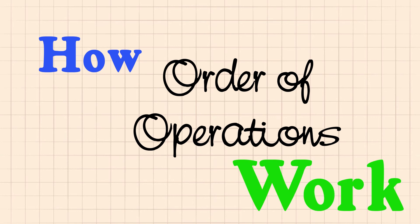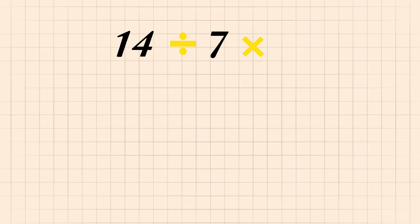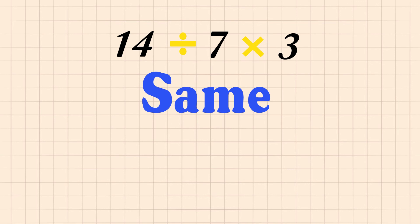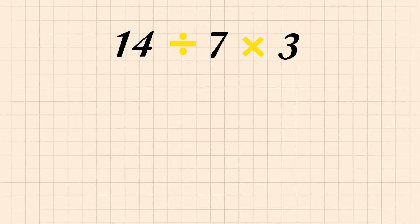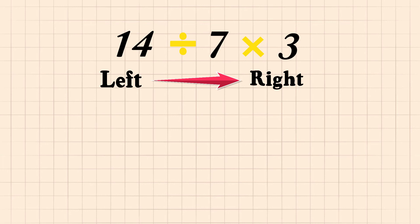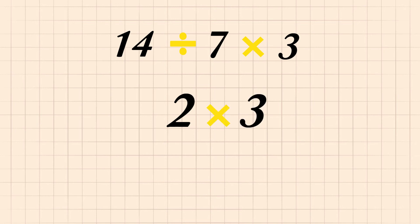Now we have understood how order of operations work. But wait — what about a problem like 14 divided by 7 multiplied by 3? We haven't learnt about questions like this yet. What if we have a problem with operations of the same importance? We solve them from left to right. Which means in this case, first we do division and then multiplication. 14 divided by 7 gives us 2, and 2 multiplied by 3 gives us 6.